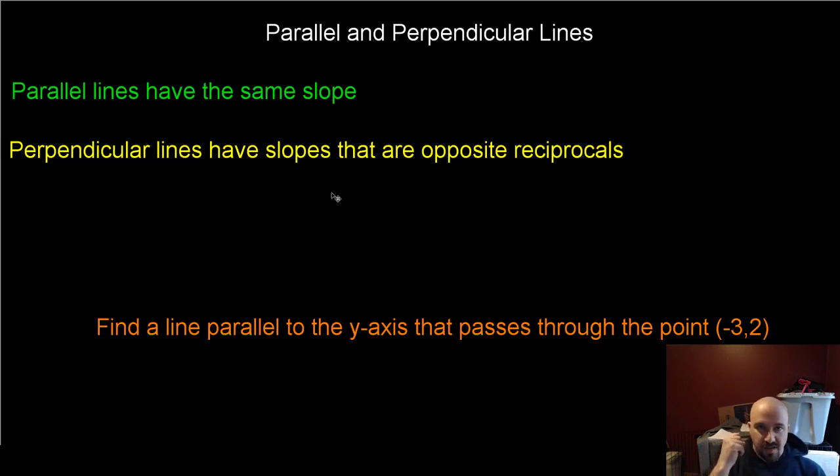Parallel lines have the same slope. Perpendicular lines have slopes that are opposite reciprocals. For perpendicular lines, you find a slope, change the sign, and flip the fraction. That's the slope of the perpendicular.